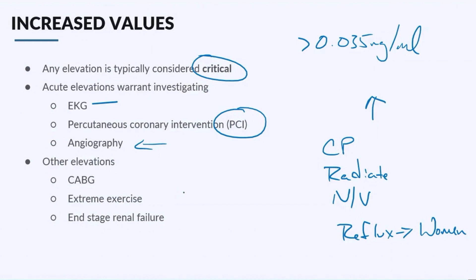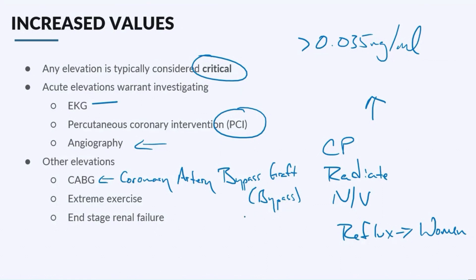There are a couple of instances where you're going to have a baseline increase in troponin levels. If your patient has had something called a CABG — a coronary artery bypass graft, commonly known as bypass, triple bypass, double bypass, or quadruple bypass — you're going to have some slight elevation in troponin. In some extreme athletes, like marathoners or people who do Ironmans, you're going to have an elevated troponin, but it's a really small percentage and the elevation is usually pretty minimal. You can also see it in adrenal failure, sepsis, acute coronary syndrome, or any situation where the heart is just not receiving enough blood and oxygen, which goes back to demand ischemia.